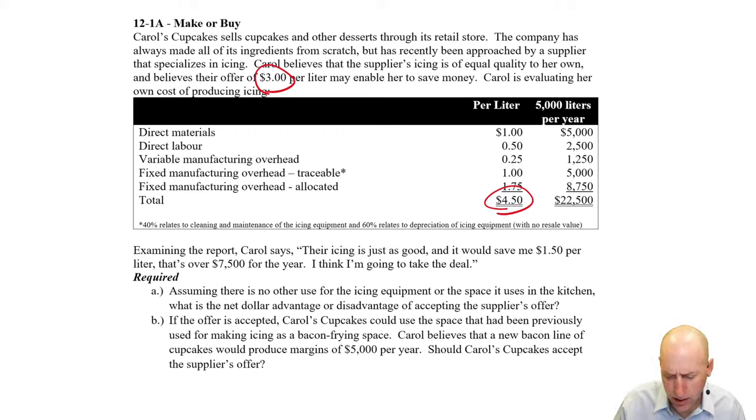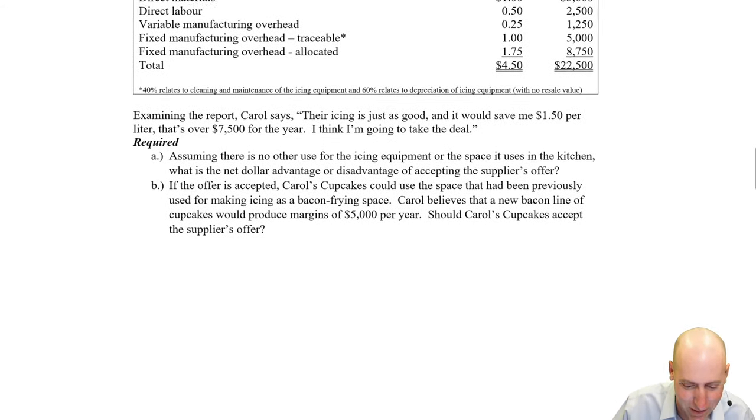Examining the report, Carol says, their icing is just as good and it would save me $1.50 per liter. That's over $7,500 per year. I think I'm going to take the deal. Now, of course, when we read this as an accounting student, somebody feels pretty sure they're going to do something. We're going to crunch some numbers and we're going to tell them not to. I don't know if that's the case in this question, but that's just sort of how I read things when I read an accounting question and somebody seems sure of themselves or sure they're going one way. We're going to read the numbers differently and tell them to go the other way, us genius accountants. Let's see if we're going to set Carol straight or not. Assuming there's no other use for the icing equipment or the space it uses in the kitchen, what's the dollar advantage or disadvantage of accepting the supplier's offer. This is a relevant cost dilemma. Again, if a cost is sunk or it's not different between the alternatives, we won't consider that. We're only going to consider the costs that are not sunk and different between the alternatives.